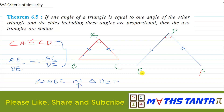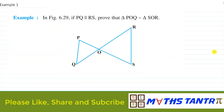Just remember these three criteria for how two triangles can be similar. If any criteria is satisfied by two triangles, then those two triangles will be called similar triangles. To understand these three criteria, let us take three examples corresponding to each one.